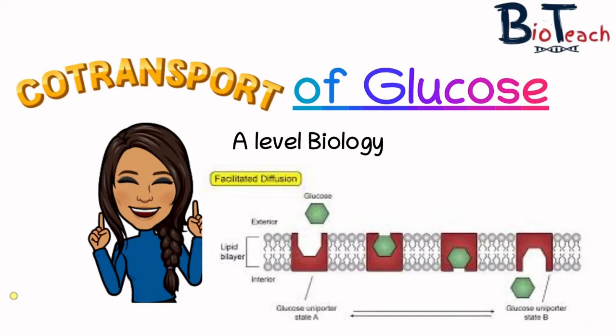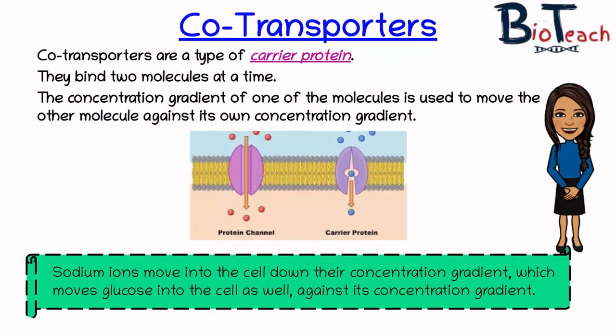Glucose is obviously a valuable currency in our bodies, because we can metabolise it to make ATP through the process of respiration, so we don't really want it to be wasted. Every last molecule of glucose has to be absorbed in. Hence, when it's in lower concentrations outside of the cell, we need to make sure that it comes in against its concentration gradient, and the membrane proteins that can make it happen are called co-transporters.